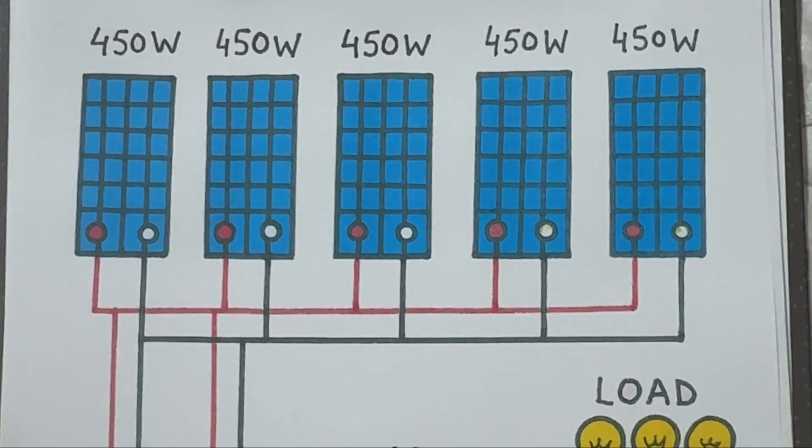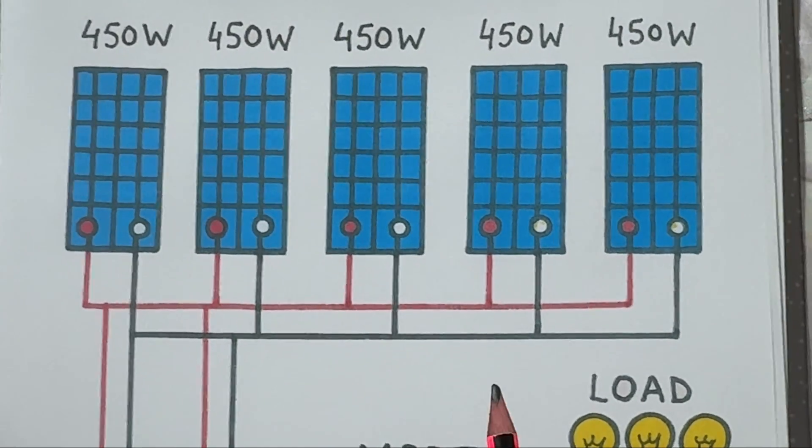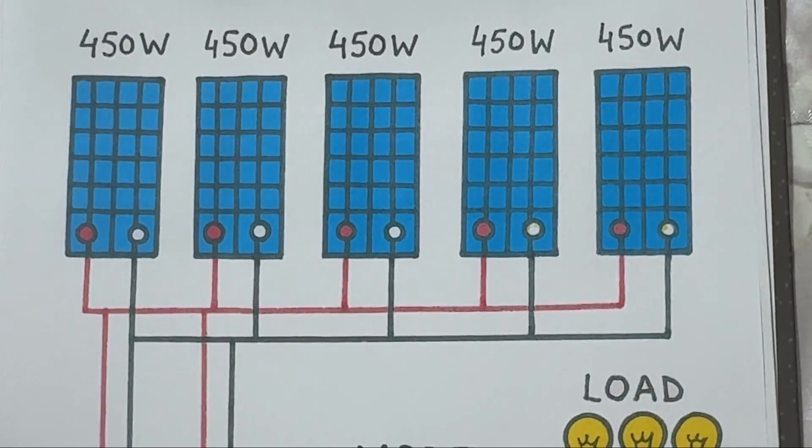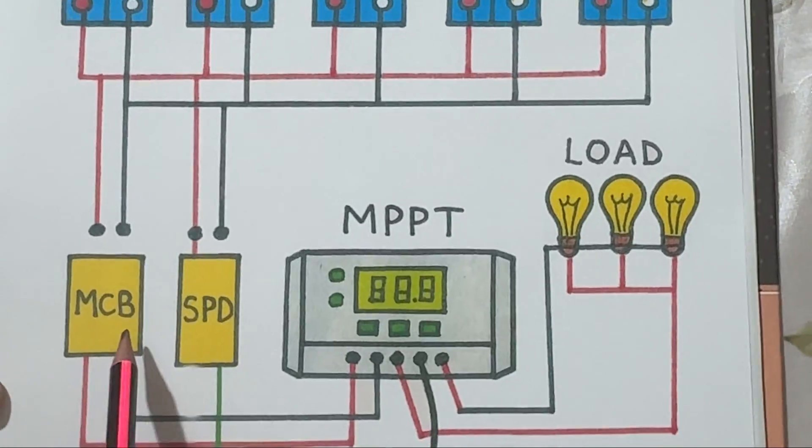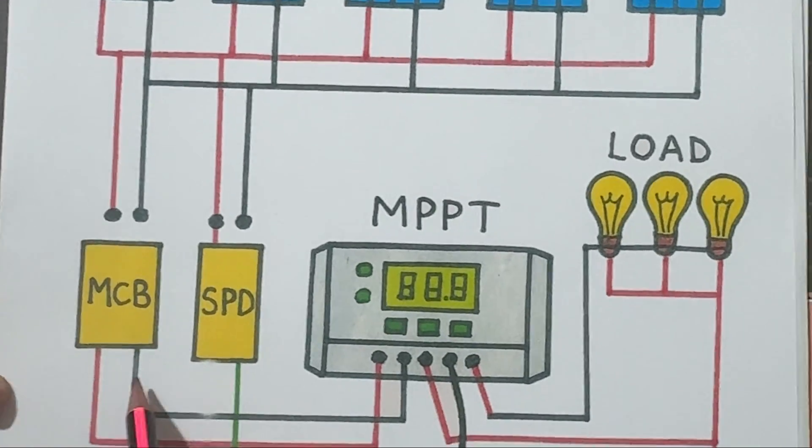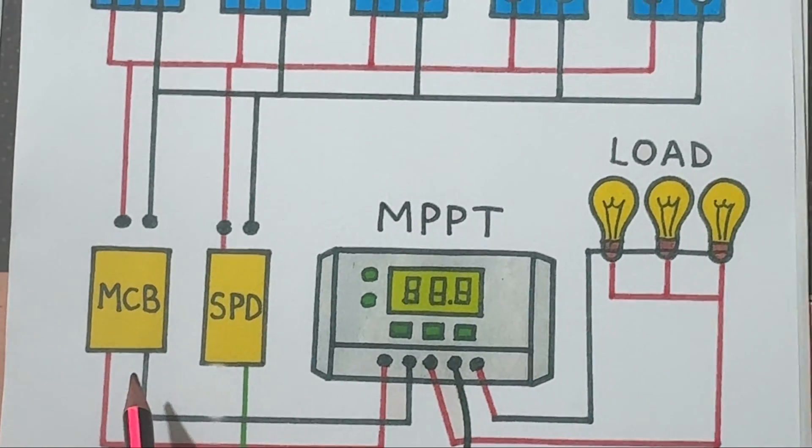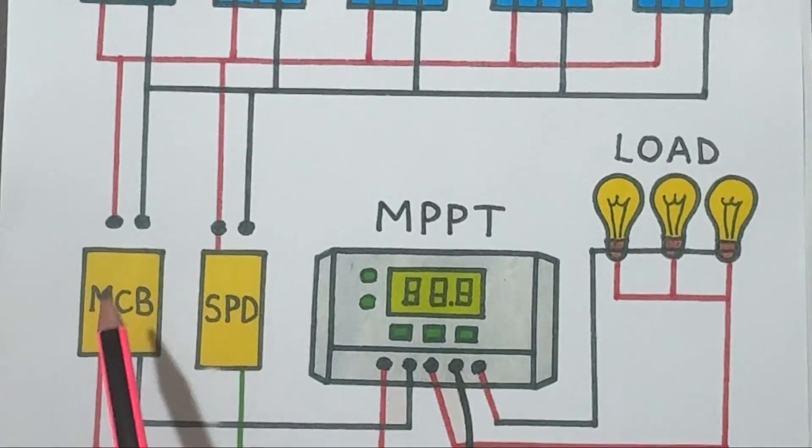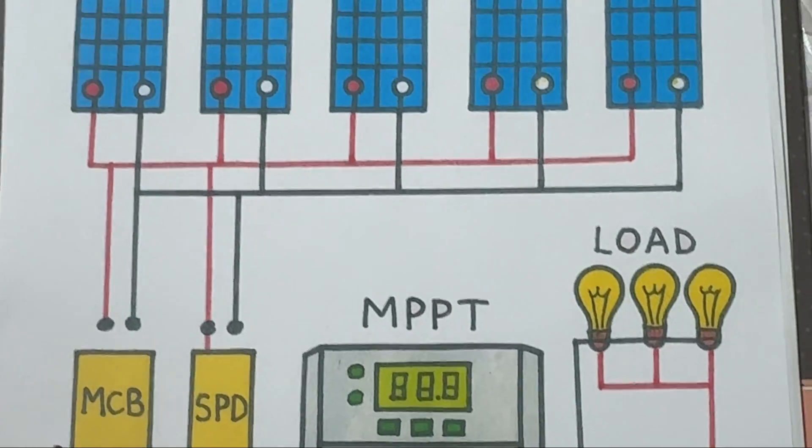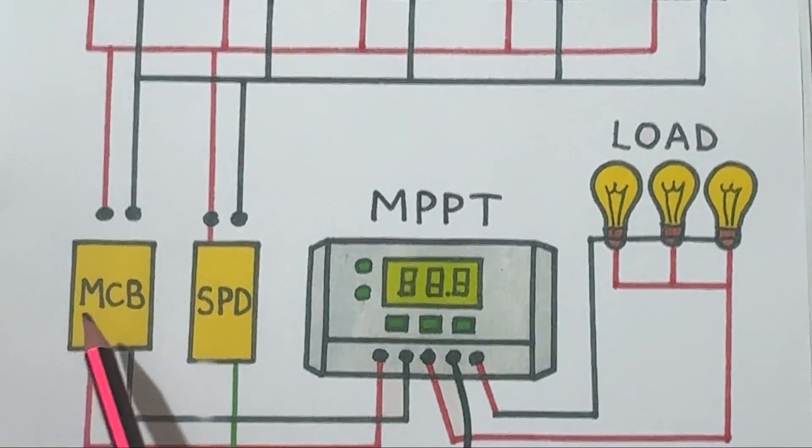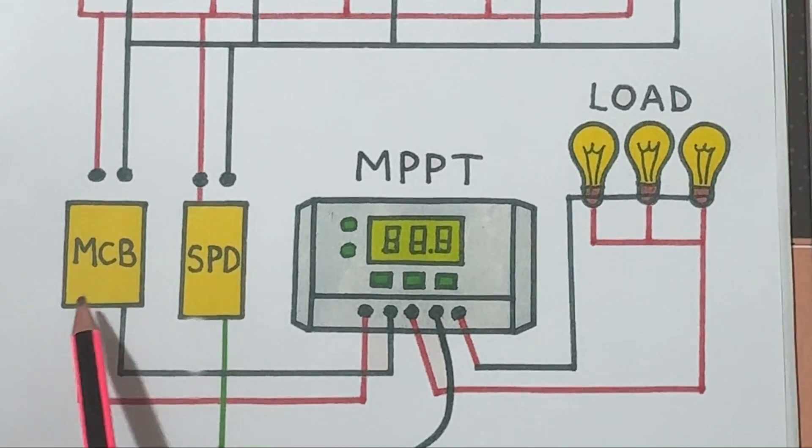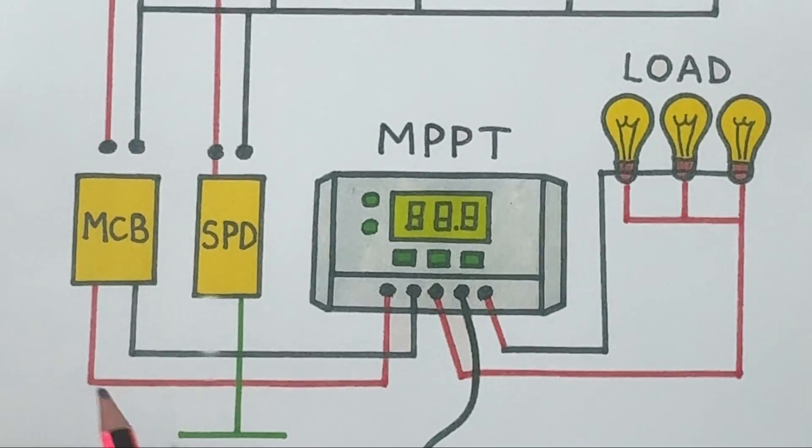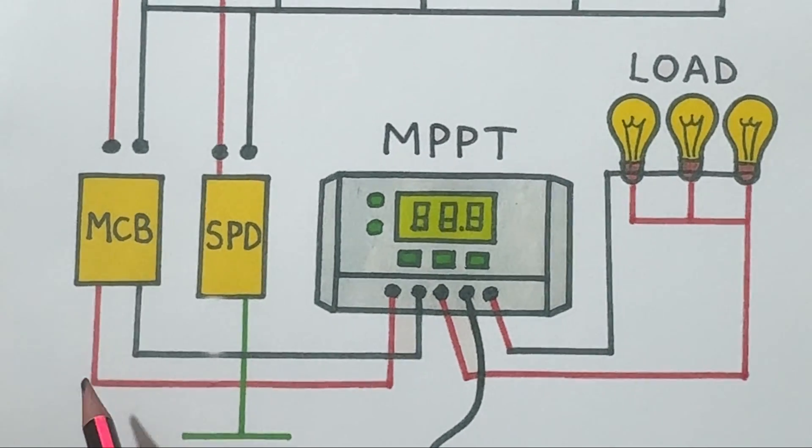This is enough to power several lights, fans, or even small appliances. Next, the electricity from the solar panels first goes through the MCB, the miniature circuit breaker. This acts as a safety switch. If there's a short circuit or overload, it automatically disconnects the solar panels from the rest of the system to protect the equipment.